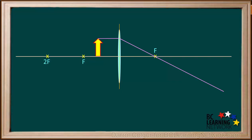Next, we draw a straight line from the top of the object through the middle of the lens, like this.